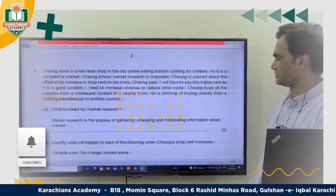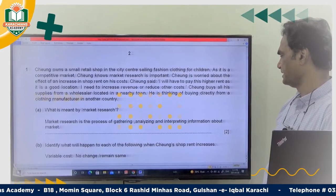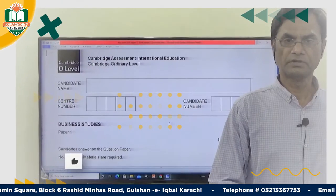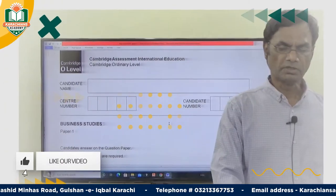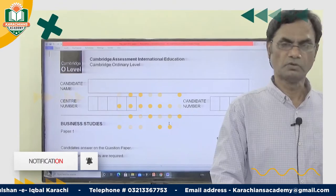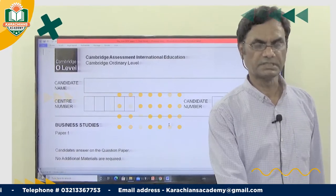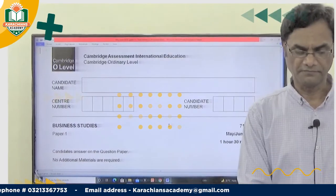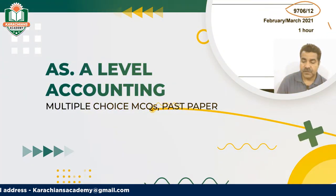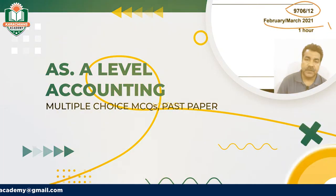We are going to solve a past paper of May-June 2019, Paper 1, Office of Studies. Its code is 7115. AS Level Accounting, its code is 9706, in February 2020.